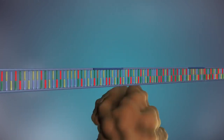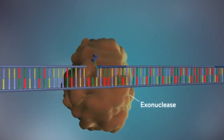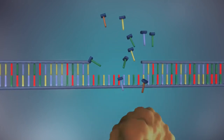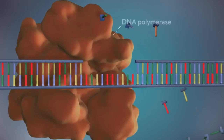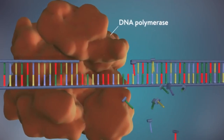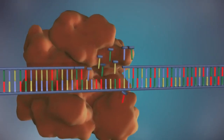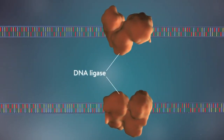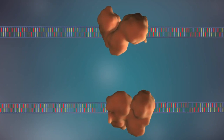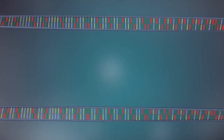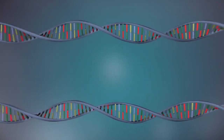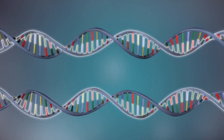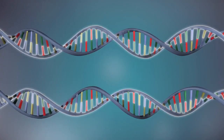Once the new DNA has been made, the enzyme exonuclease removes all the RNA primers from both strands of DNA. Another DNA polymerase enzyme then fills in the gaps that are left behind with DNA. Finally, the enzyme DNA ligase seals up the fragments of DNA in both strands to form a continuous double strand. DNA replication is described as semi-conservative because each DNA molecule is made up of one old, conserved strand of DNA and one new one.